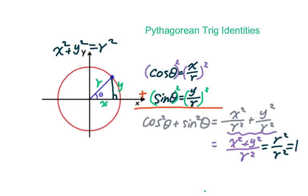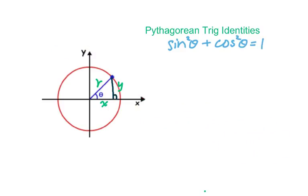In other words, we get the identity: sin squared θ plus cosine squared θ equals 1. We call this the first Pythagorean trig identity.